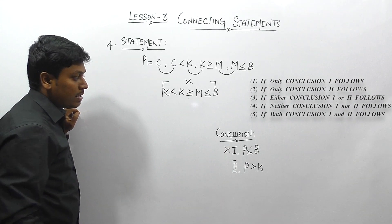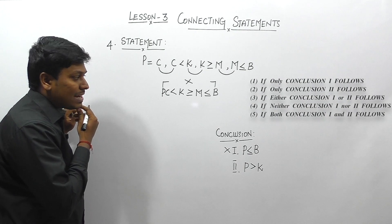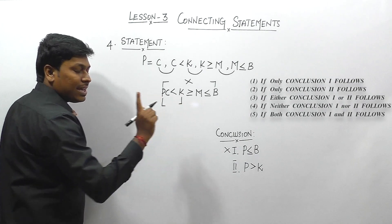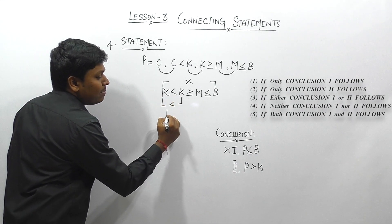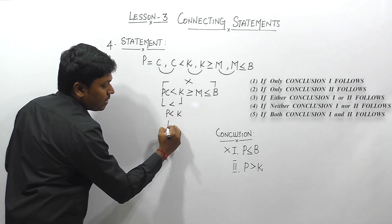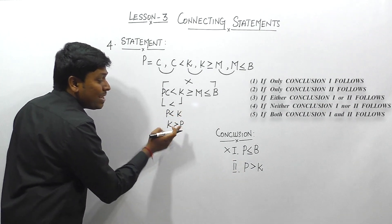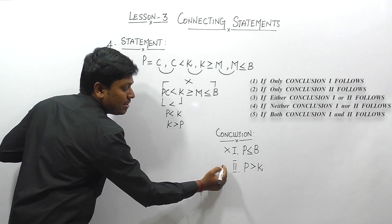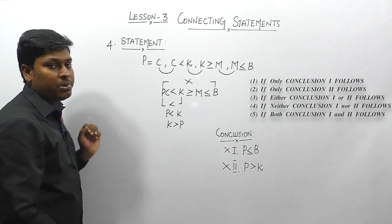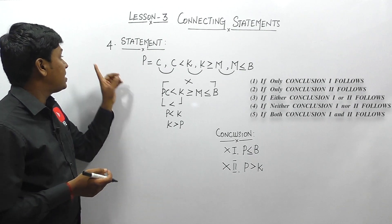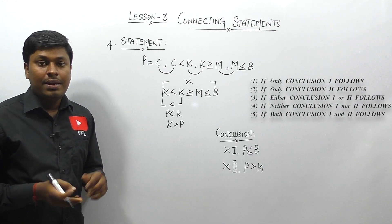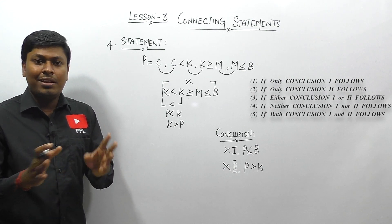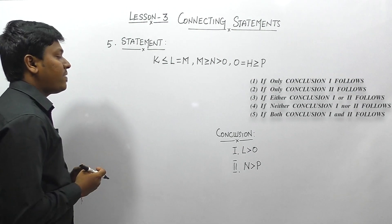Conclusion 1: P ≤ B. Between P and B there are three symbols including one < and one >, which are dissimilar — relationship cannot be established, so conclusion 1 is false. Conclusion 2: P > K. Between P and K there is only one symbol: <, giving P < K. But the conclusion states P > K, which is the opposite — so conclusion 2 is also false. Answer: option 4, neither nor.